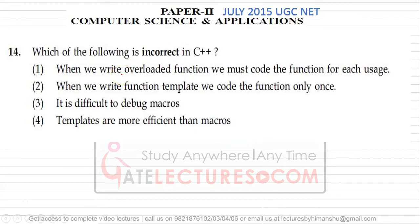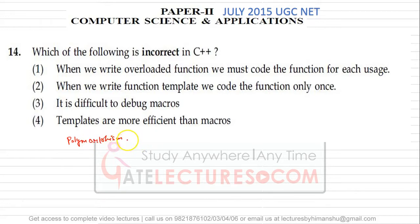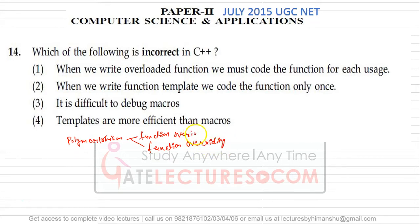Question number 14 asks which of the following is incorrect in C++. We have four statements and we need to find the incorrect one. The first statement is: when we write an overloaded function, we must code the function for each use. To understand this, let's look at function overloading.